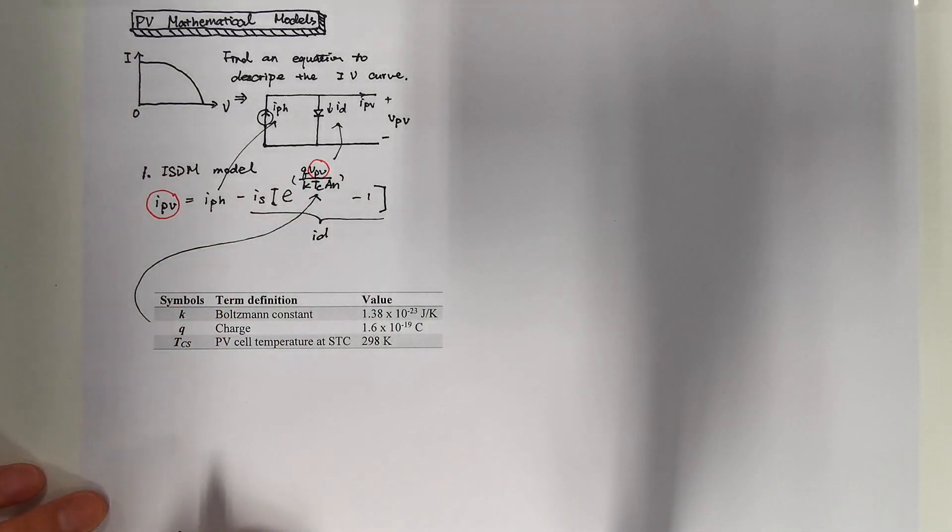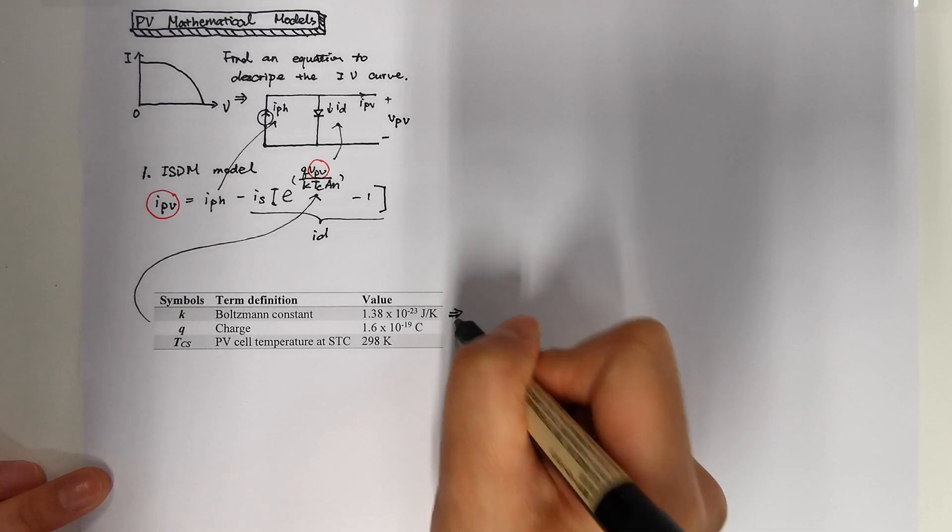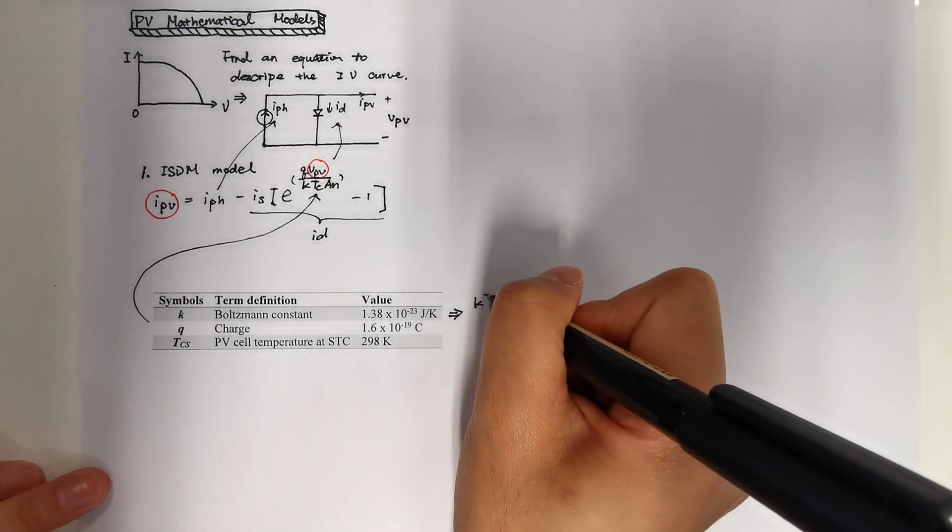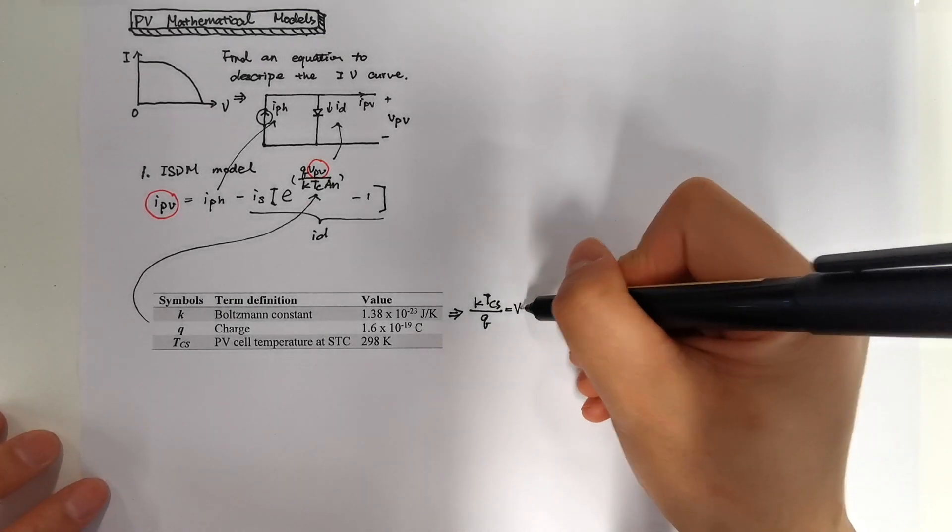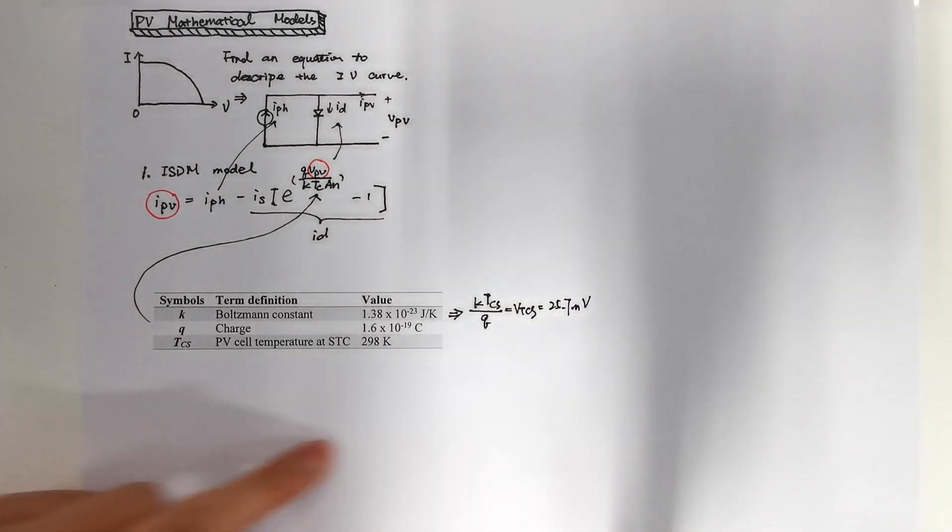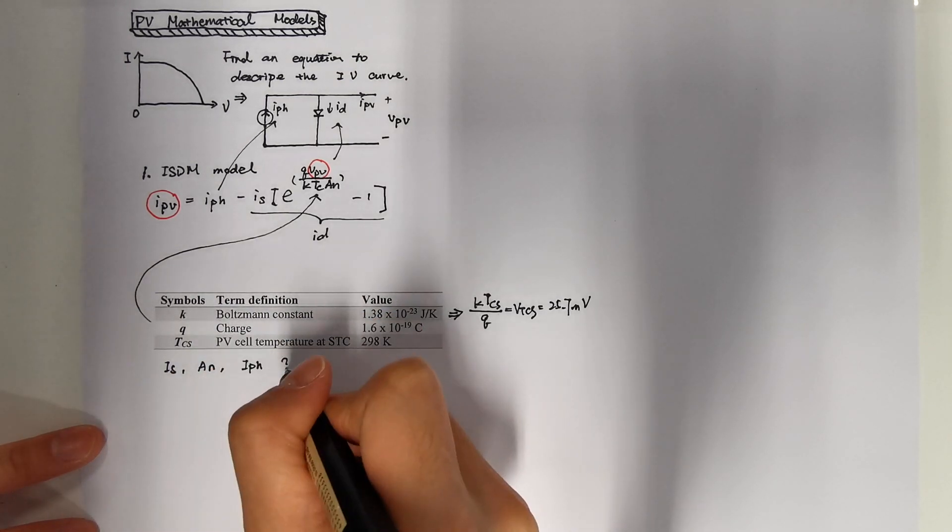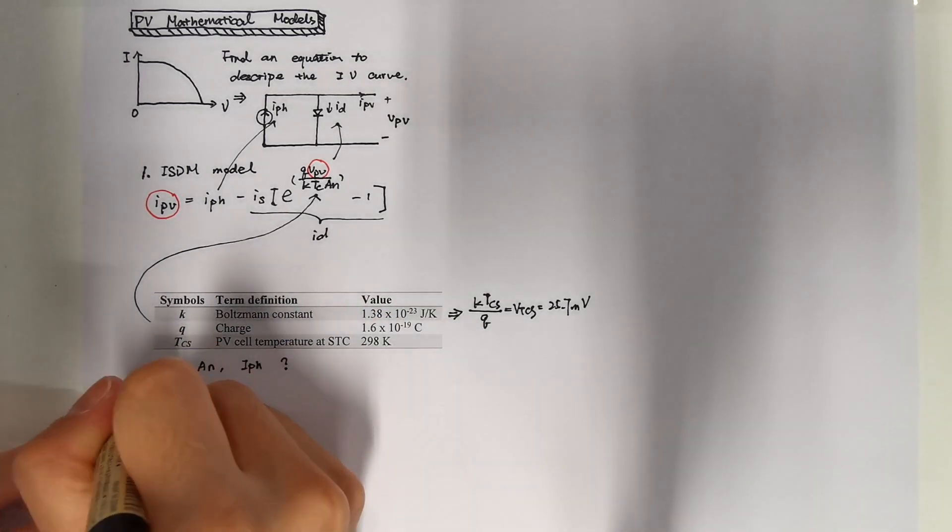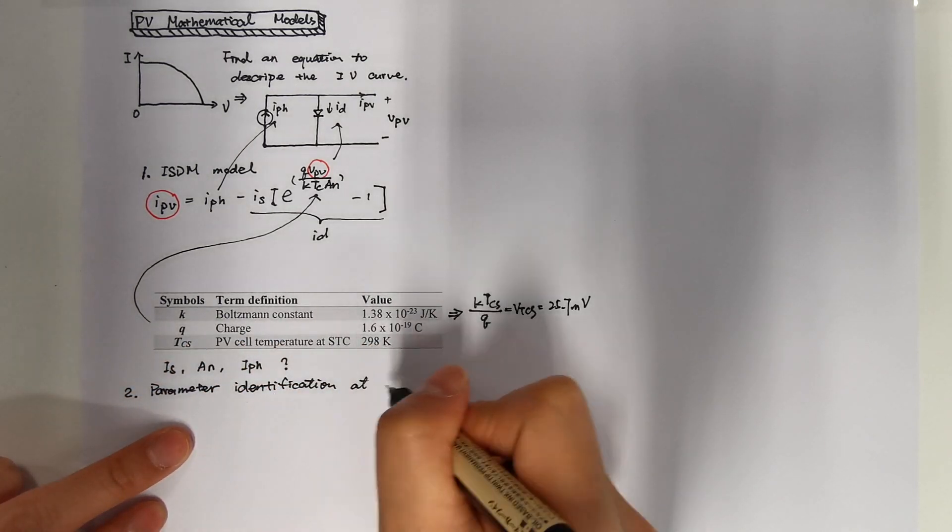The known parameters in this equation are listed here. We can put all this together as VTCS and the value is 25.7 millivolts. In this equation, the three unknown values are IS, AN, and IPH. And now we are going to identify them.